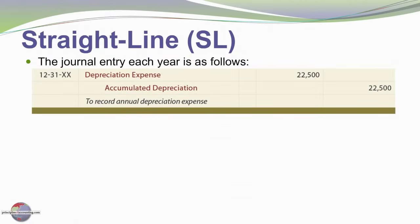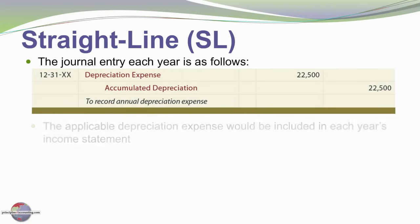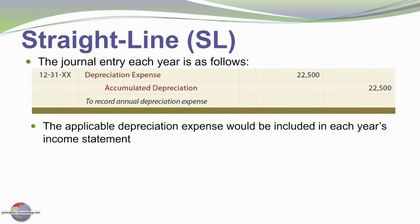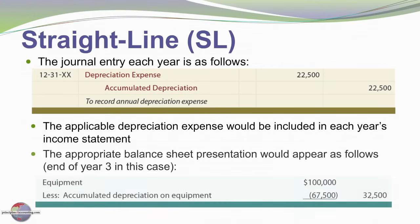If we were to look at the journal entry for any given year, we would debit depreciation expense and credit accumulated depreciation. The applicable depreciation expense would be included in each year's income statement. The appropriate balance sheet disclosure, for example at the end of year three, would show the equipment minus three years at $22,500 per year, or $67,500 of accumulated depreciation, giving us a $32,500 net book value at the end of the third year.